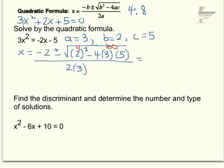And of course, you know that 4 minus 60 is negative 56. And the denominator, 2 times 3 is 6.